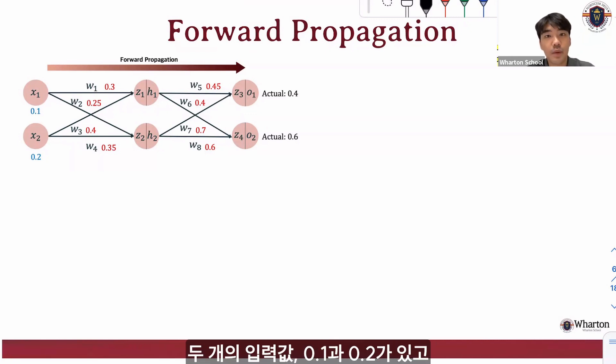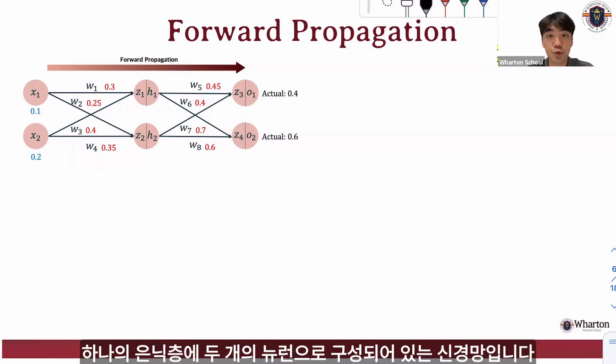Let's solve this given problem. We have two inputs, 0.1 and 0.2, and one hidden layer with two neurons.